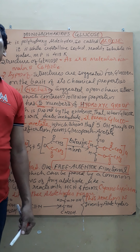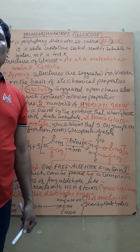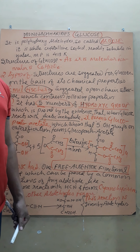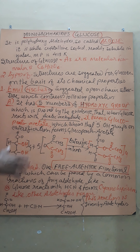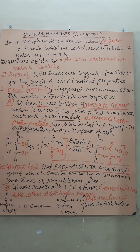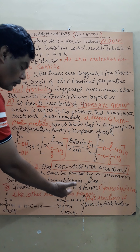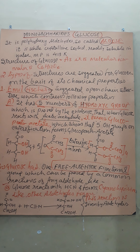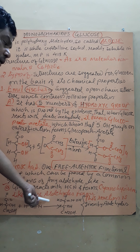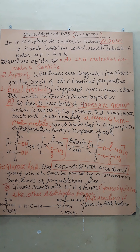Aldehydes also reduce Tollens' reagent, Fehling's solution, and bromine water. When glucose reacts with hydrogen cyanide (HCN), it forms cyanohydrin — called glucocyanohydrin — just like other aldehydes form cyanohydrin. This nucleophilic addition reaction proves that glucose has one aldehyde group.